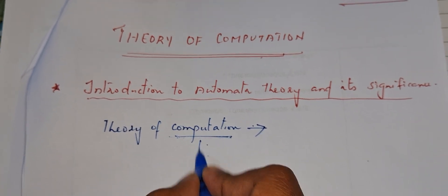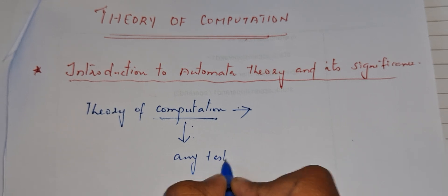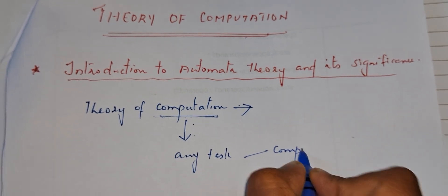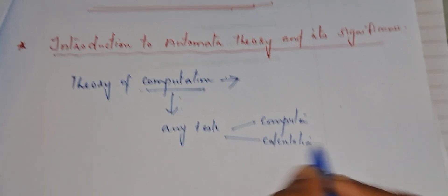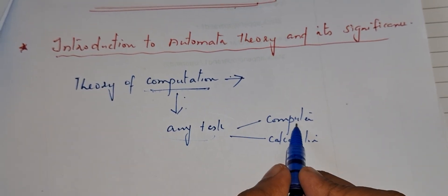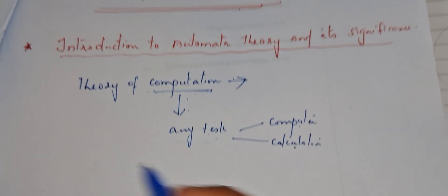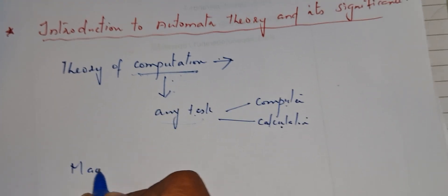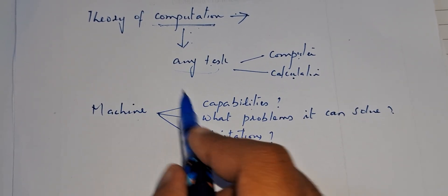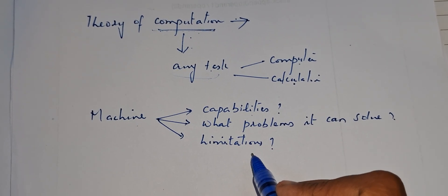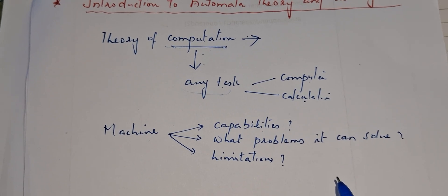So what do you mean by computation? Computation means any task that can be performed by a computer or a calculator. So we need to design a machine, and consider what are the capabilities of this particular machine, what problems it can solve, and what are the limitations of this particular machine.